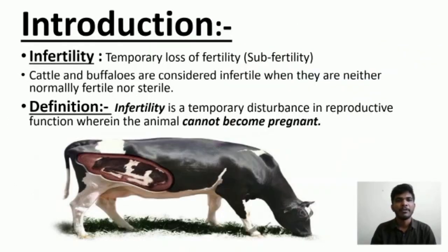Meaning of infertility: Infertility means temporary loss of fertility or sub-fertility. Cattle and buffaloes are considered as infertile when they are neither normally fertile nor sterile. Definition of infertility: Infertility is a temporary disturbance in reproductive function wherein the animal cannot become pregnant.